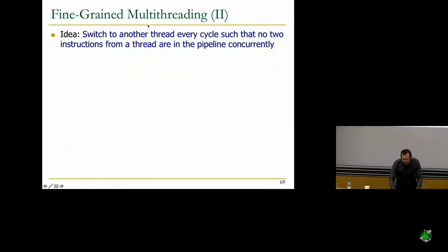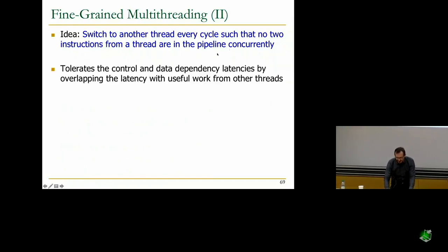This is the idea, again, posed in a different way. Switch to another thread every cycle, such that no two instructions from a thread are in the pipeline concurrently. It improves pipeline utilization by taking advantage of multiple threads. This was actually a really old idea.